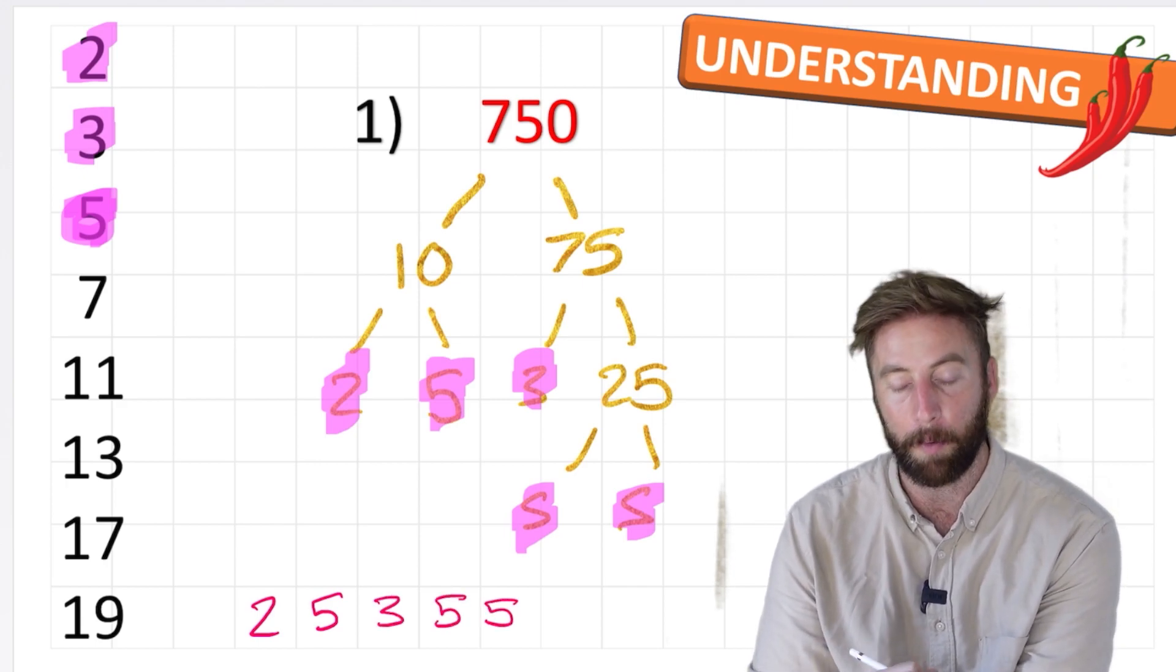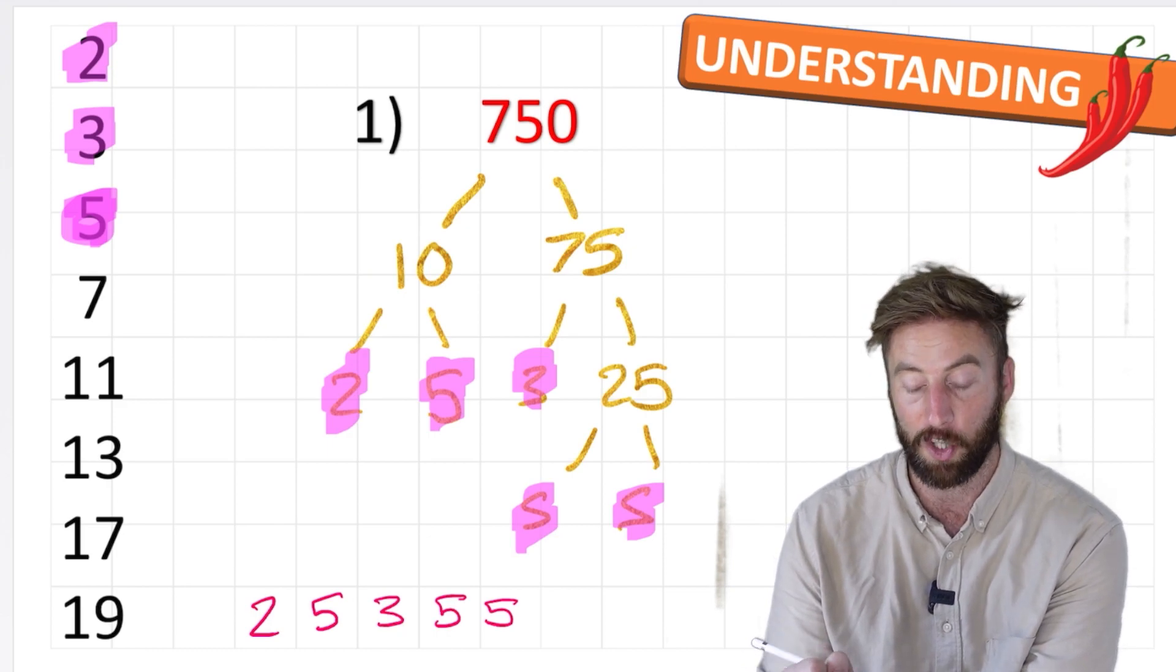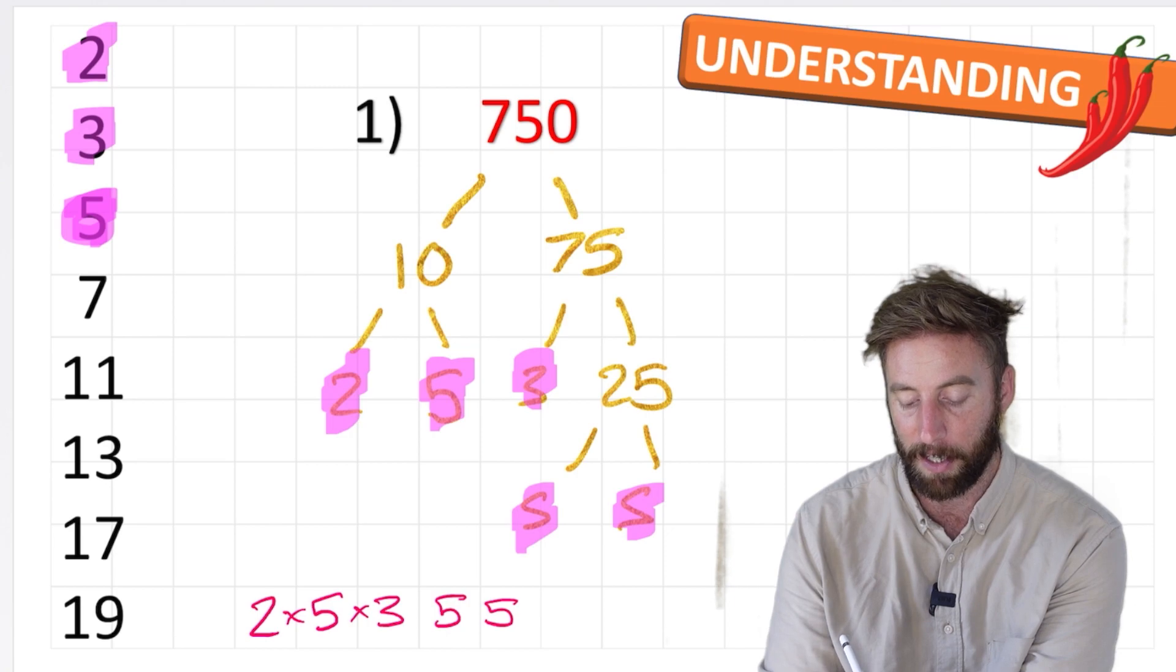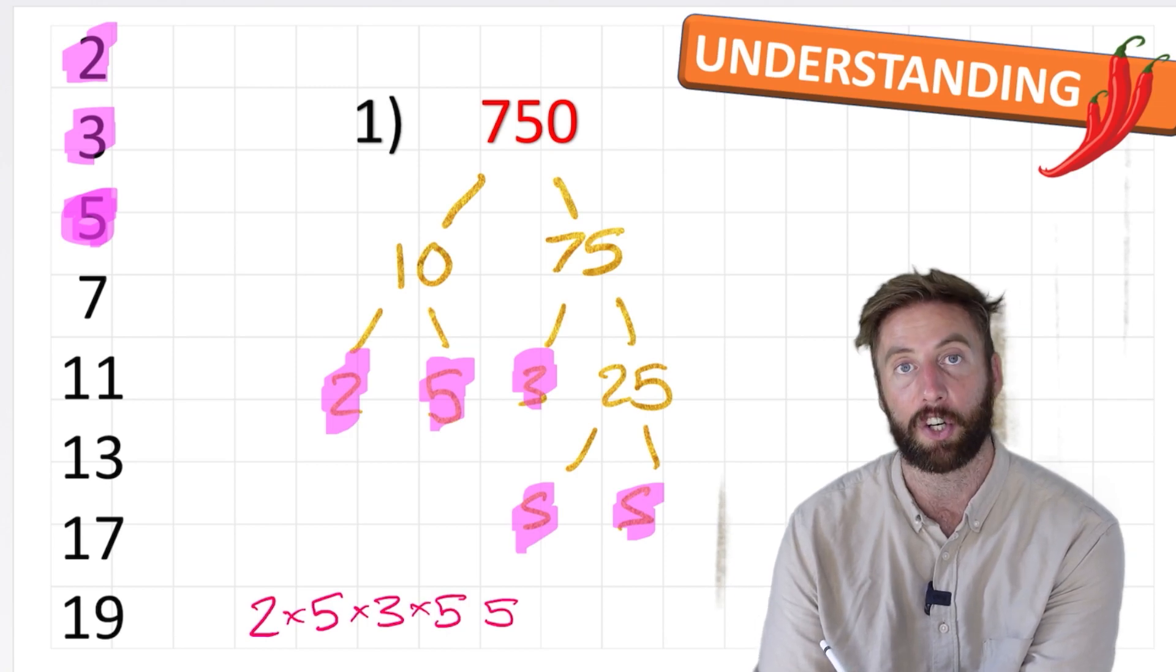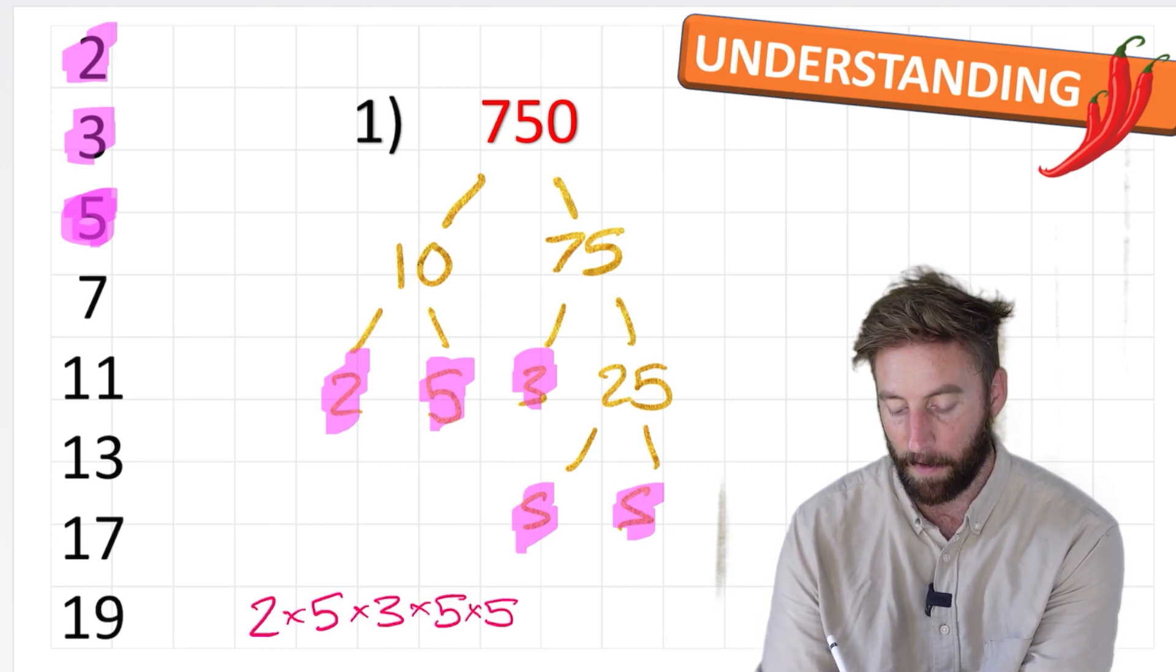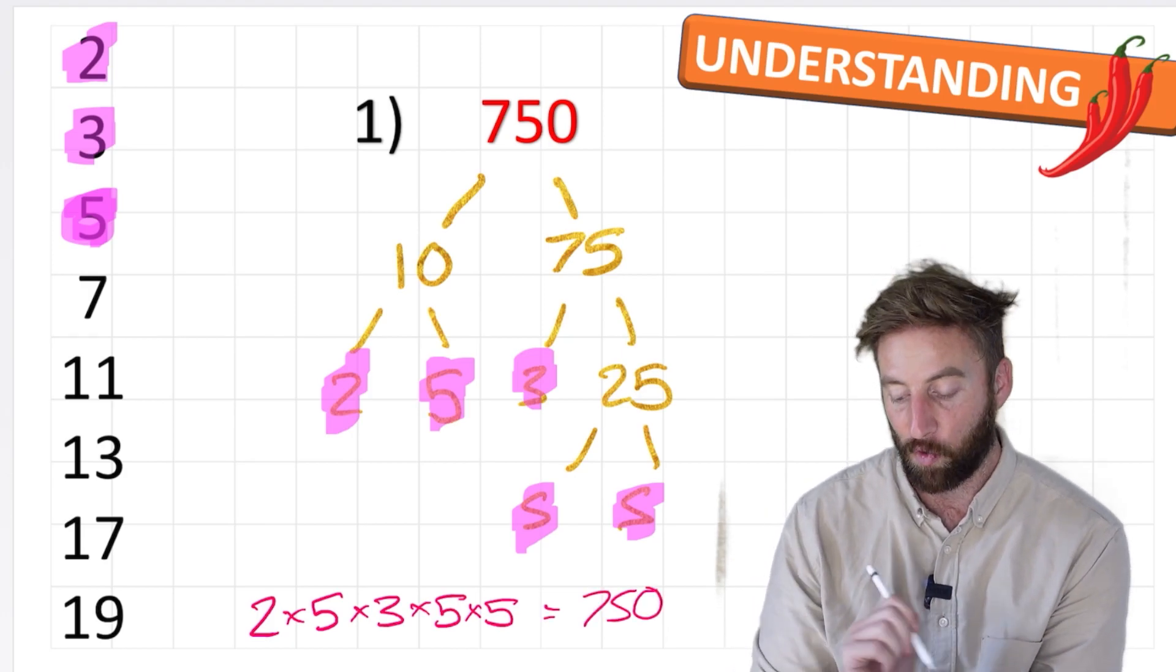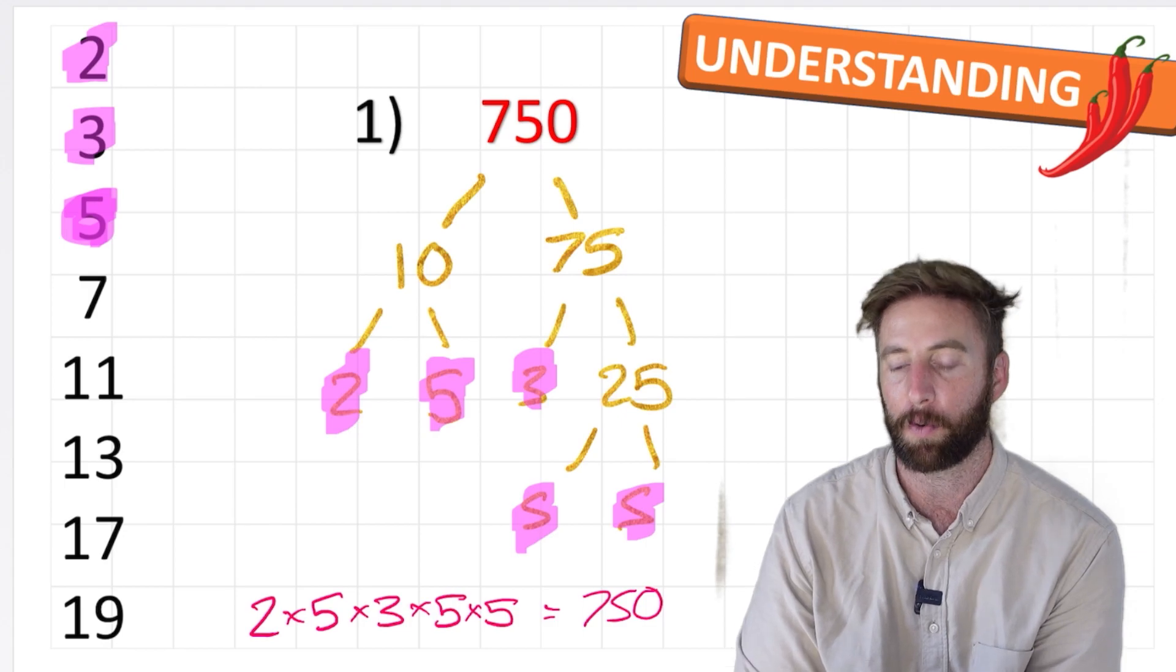And it doesn't really matter which way around we multiply this because as we know, multiplication is commutative. So I'm going to do 2 times 5 is 10 times 3 is 30 times 5 is 150 times 5 again is 750. And there we have it. Our red chili challenge actually wasn't too difficult at all.